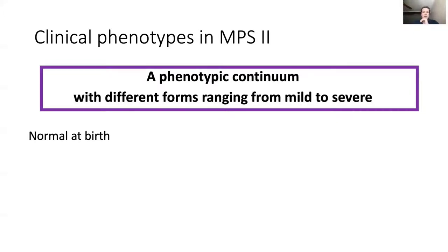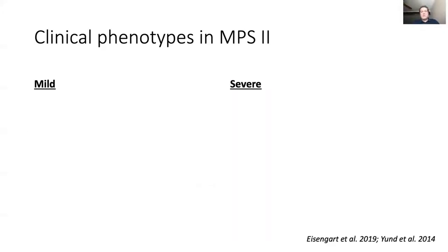Children with the severe form develop somatic signs between two to four years of age. With the milder form, it varies quite a bit. What's important is the CNS phenotype. With neuropsychological assessments, we can assess different aspects of cognition and behavior to distinguish these phenotypes.